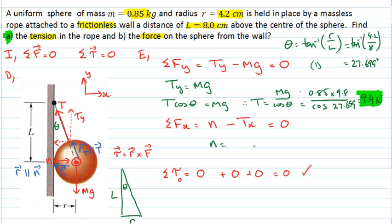For part B, we can write down that the normal force is equal to the horizontal component of the tension force Tx. That's going to be given by the magnitude of the tension force times the sine of the angle theta. And we know what those things are from above. We've got 9.4 newtons times the sine of 27.699 degrees. And that gives the normal force is equal to 4.4 newtons. And we found the answer for part B.